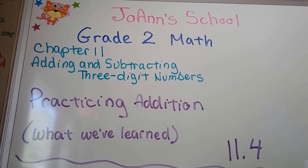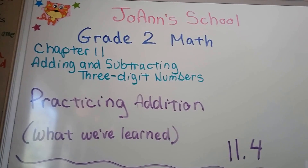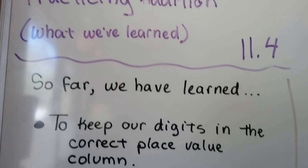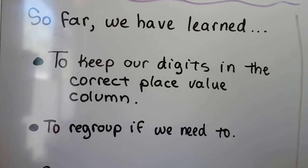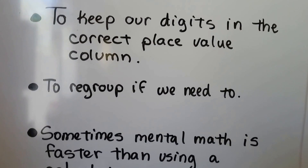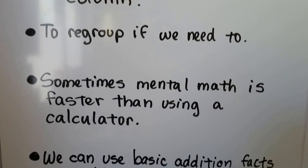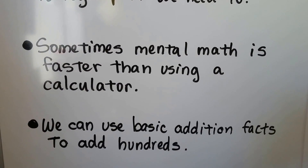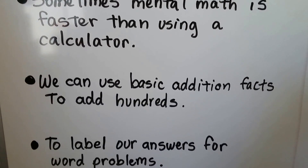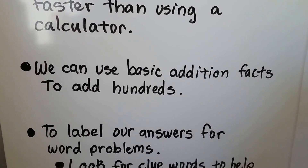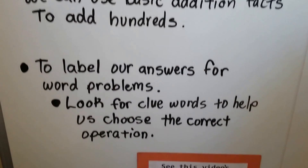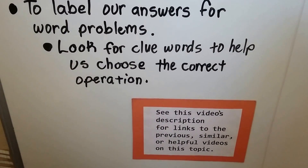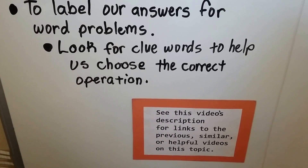We're going to be practicing what we've learned so far. This is Practicing Addition Lesson 11.4. So far we have learned to keep our digits in the correct place value column, to regroup if we need to, and sometimes mental math is faster than using a calculator. We've learned we can use basic addition facts to add hundreds, and we've learned to label our answers for word problems and to look for clue words to help us choose the correct operation.